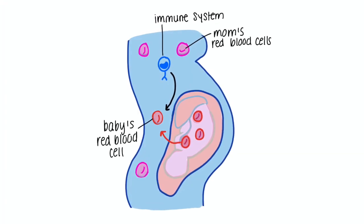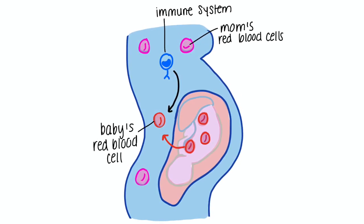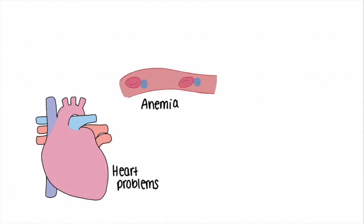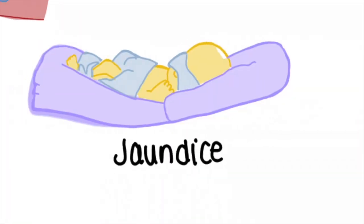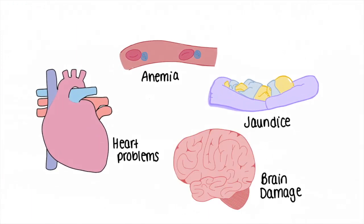These antibodies against your baby's blood can impact your future pregnancies in a number of ways. If these antibodies attack the baby's blood, this can lead them to have heart problems, anemia, which is a lack of oxygen-rich blood, and jaundice, when your baby's skin turns yellow. This can even lead to brain cell damage if severe.